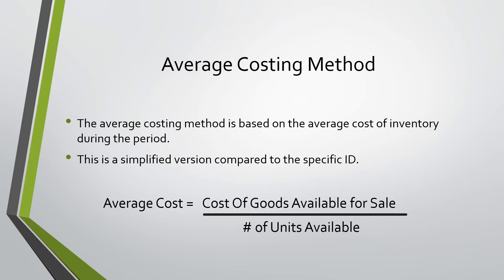The second method is the average costing method. This is based on the average cost of inventory during the period — it is a simplified version compared to specific ID. Your average cost per unit would be cost of goods available for sale divided by the number of units available. This means that no matter what unit you're selling or the consumer has bought, we just apply that average cost of goods sold to it.